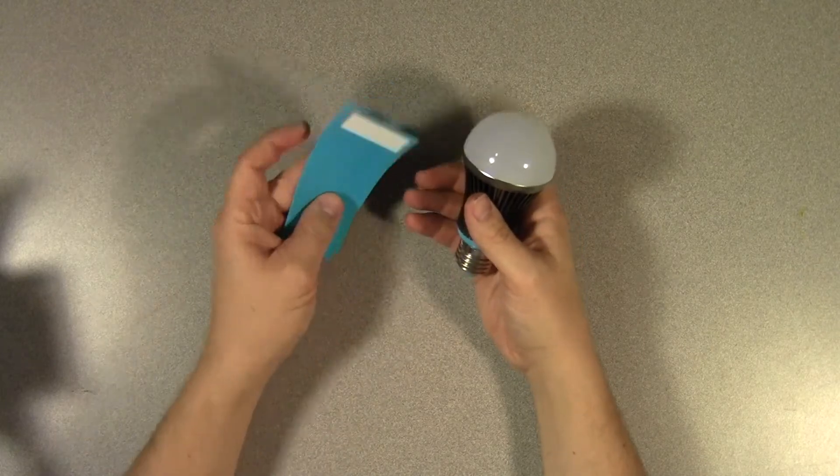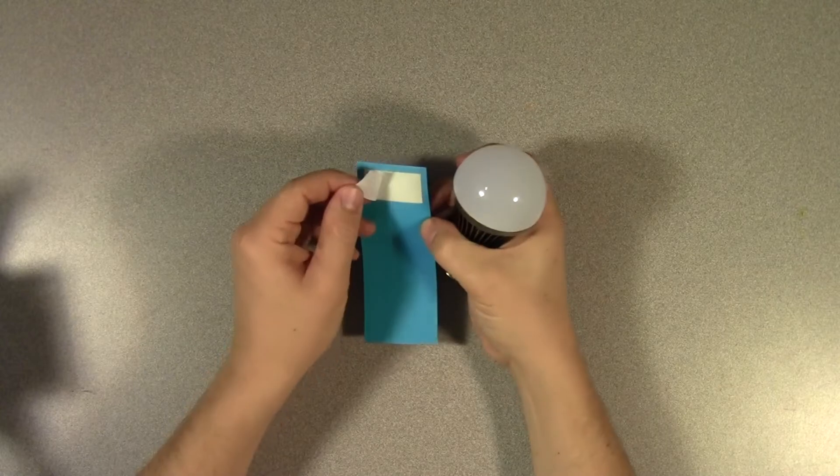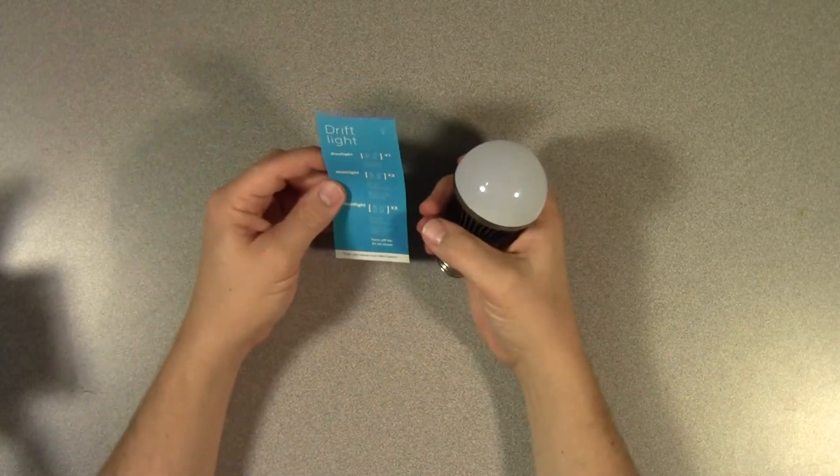Thankfully it's pretty easy and chances are you won't even need this. On the back of this card there's actually even some adhesive that you can stick onto something so it's nearby the light switch.